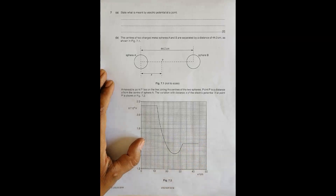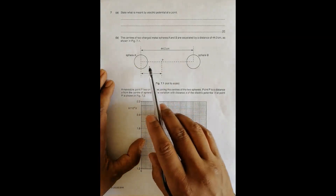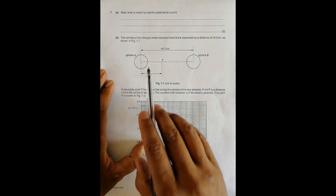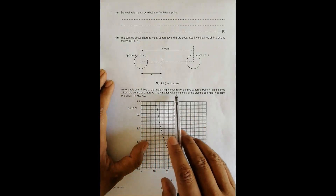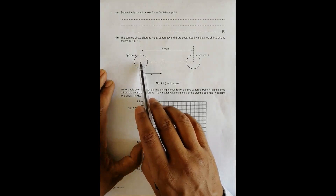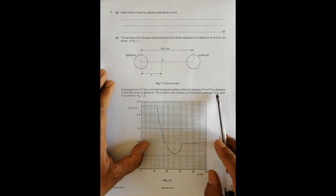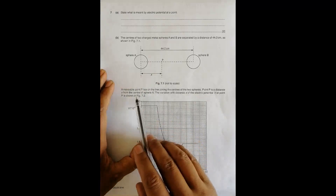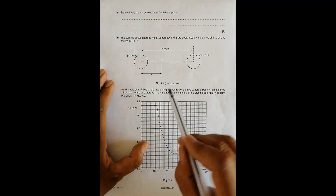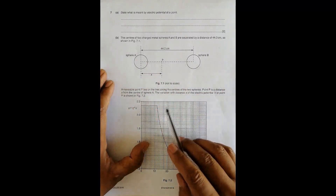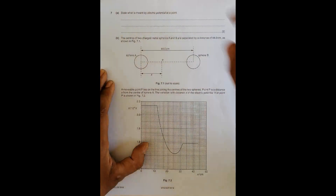Our main focus is the next question. The centers of two charged metal spheres A and B are separated by a distance of 44 centimeters. A movable point P lies on the line joining the centers of the two spheres. Point P is at a distance x from the center of A, so the distance from B would be 44.0 minus x centimeters.